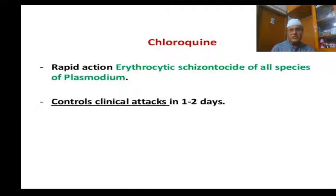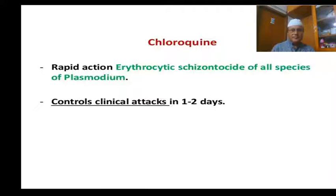The most important individual drug is chloroquine. It has a rapid onset of action and is a high-efficacy drug. The drug kills the malarial parasite at the erythrocytic schizont stage, effective against all species of Plasmodium. Plasmodium falciparum is also effective, but only chloroquine-sensitive strains — not all falciparum.